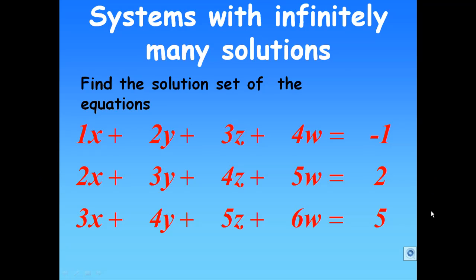Hi, for this recording I'm going to show you how to solve a system of equations with infinitely many solutions. In this case, the system of equations is x plus 2y plus 3z plus 4w equal to minus 1, and 2x plus 3y plus 4z plus 5w equal to 2, and 3x plus 4y plus 5z plus 6w equal to 5.